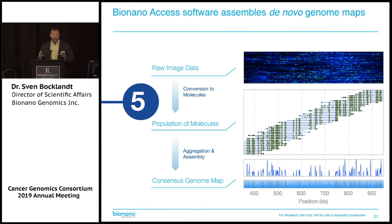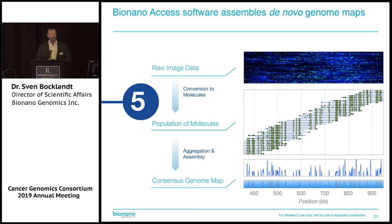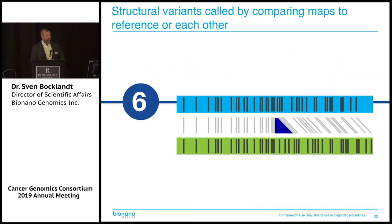From the images we collect, we create digital representations of the molecules and pairwise align them to build a complete de novo assembly of the genome. A de novo assembly is important because if you have a highly rearranged cancer genome, you don't want a reference to tell you where the genome should look like. Instead, we build the genome that is really there.